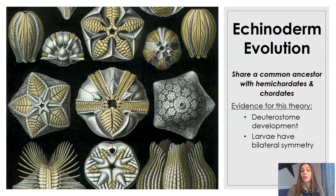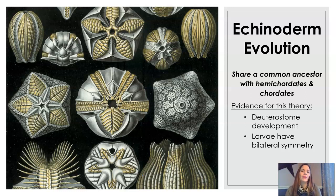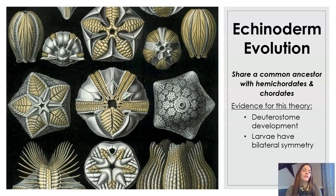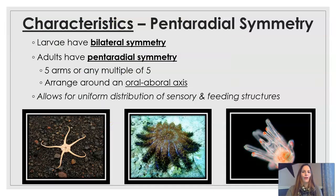A little bit about the evolution before we get into the diversity of the phylum. Echinoderms are being discussed at this point in the semester because they share a common ancestor with hemichordates and chordates like us. There's evidence for that: first, they have deuterostome development. Up until now we've been discussing organisms with protostome development — these are the first ones with deuterostome. They also have bilateral symmetry as a larval form, showing that there is some sort of common ancestor.